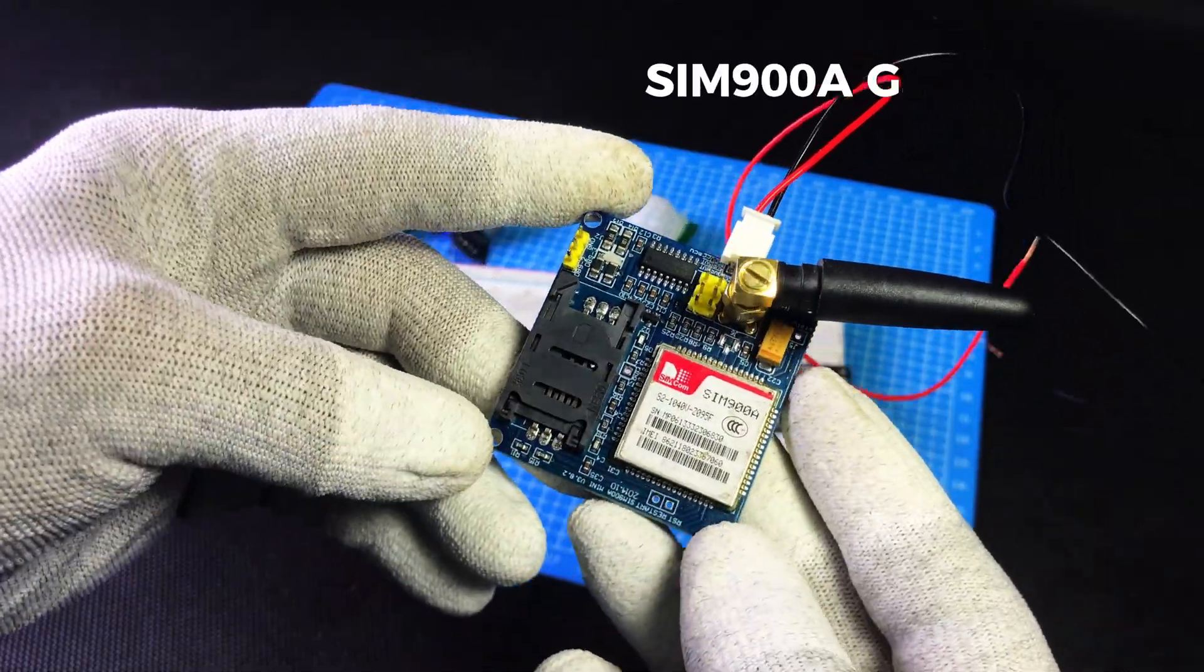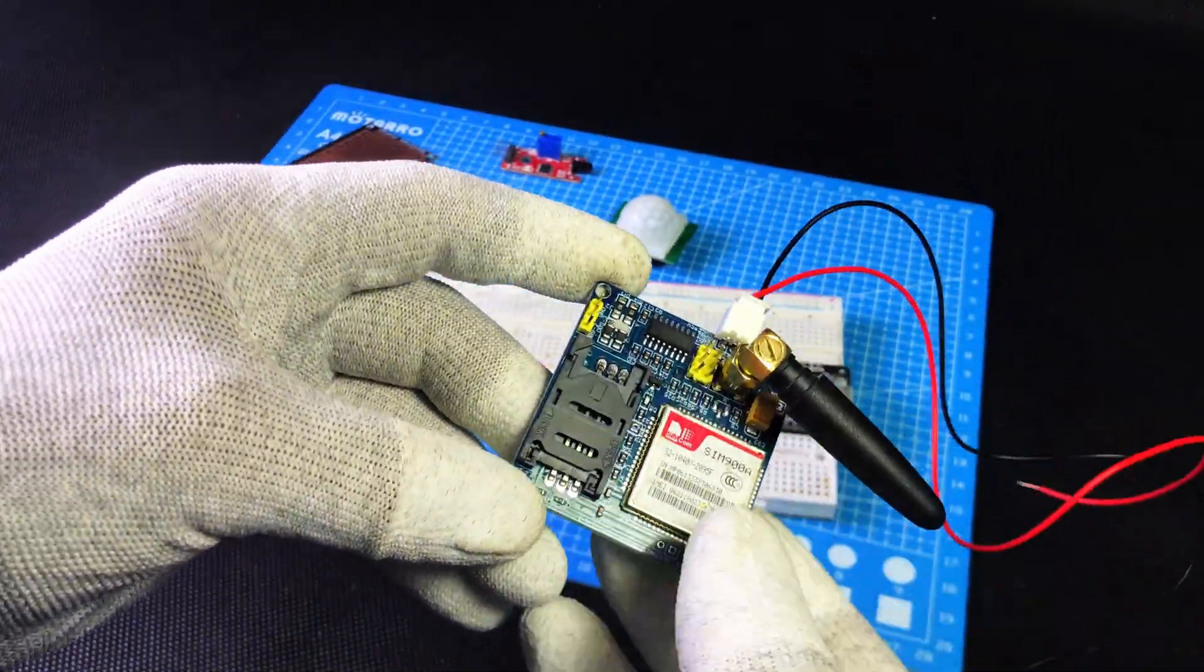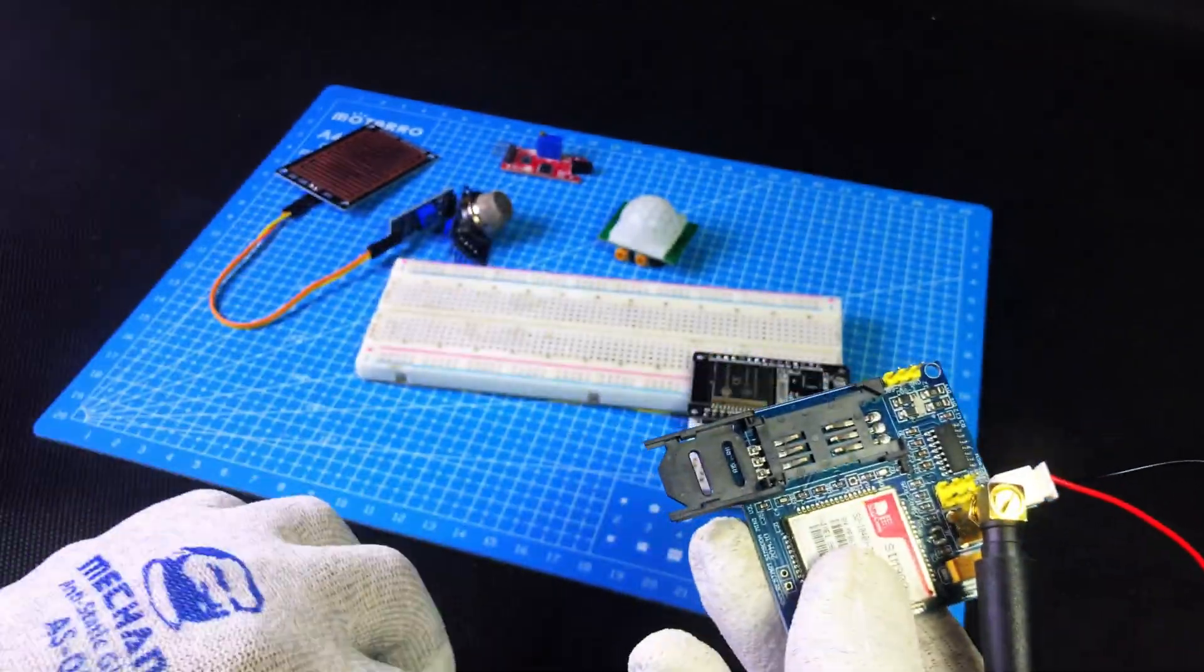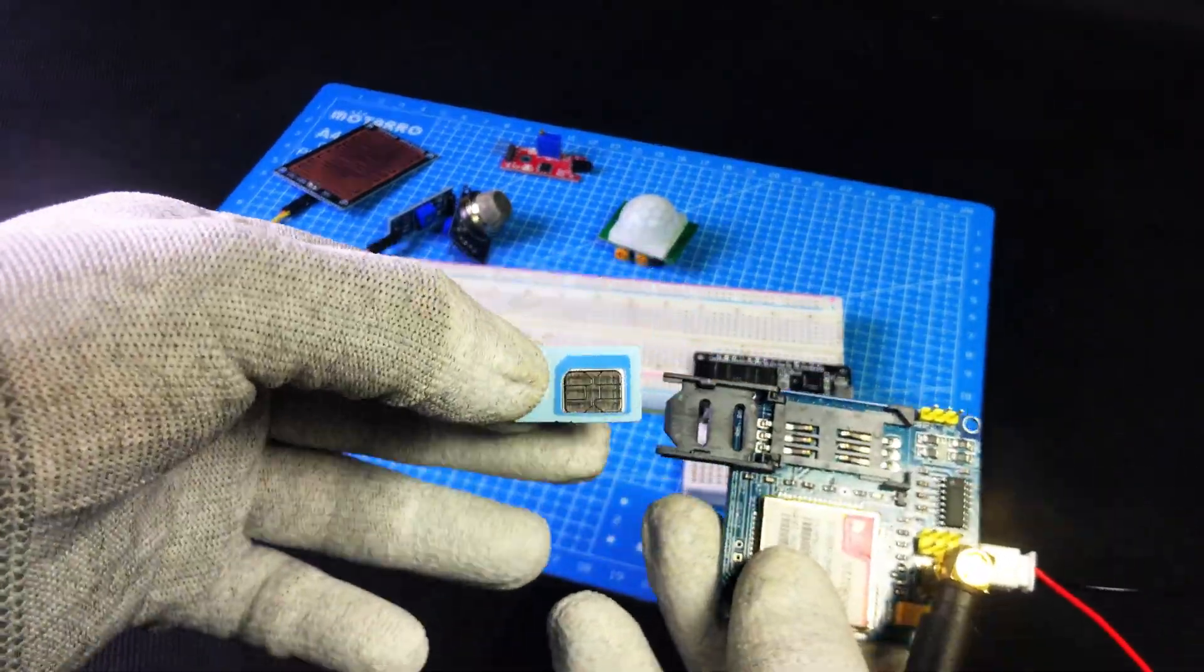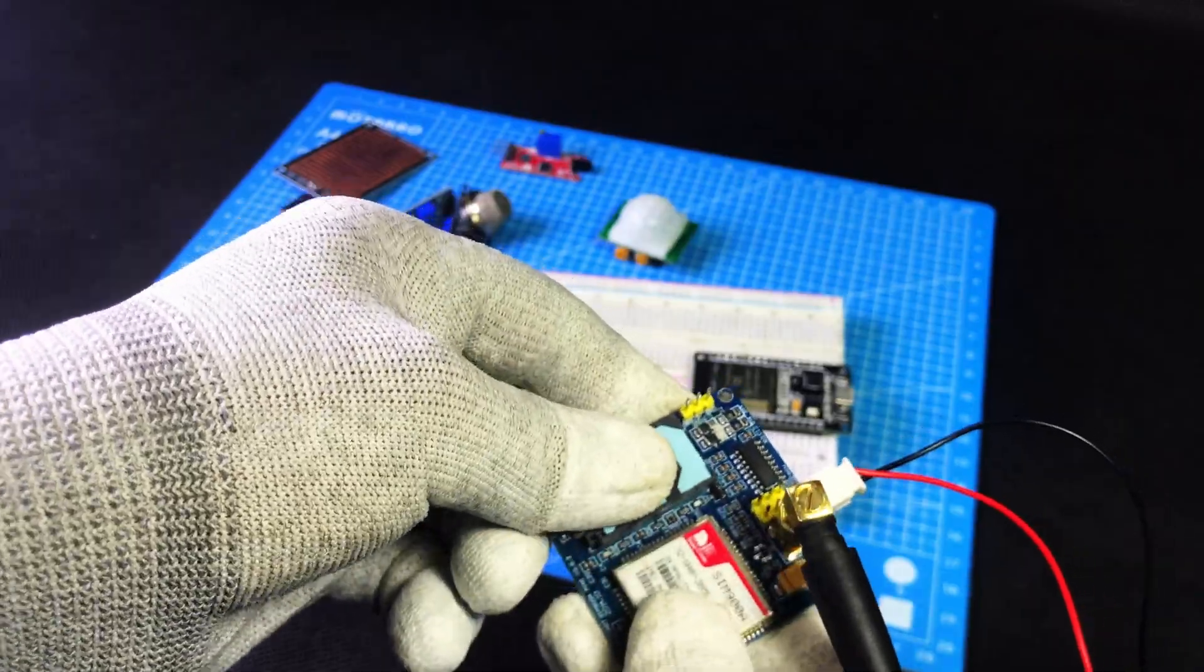SIM900A GSM module. This module sends an SMS to your phone in case of emergency. Push the SIM slot with your finger, then place the SIM card in the correct direction and lock it.